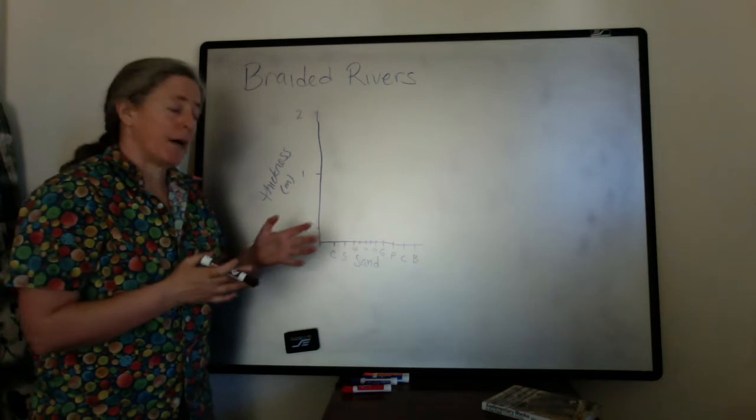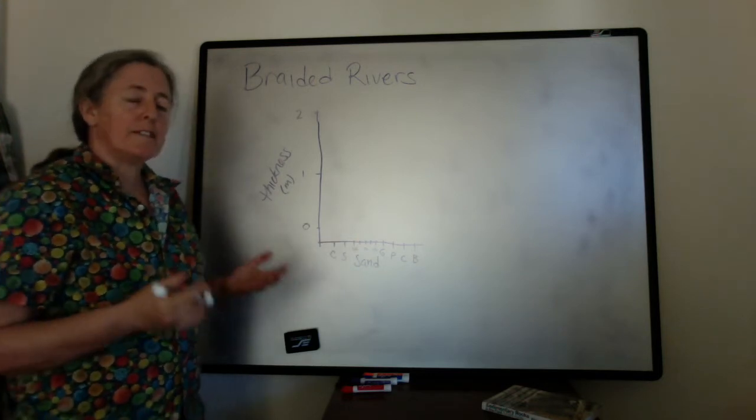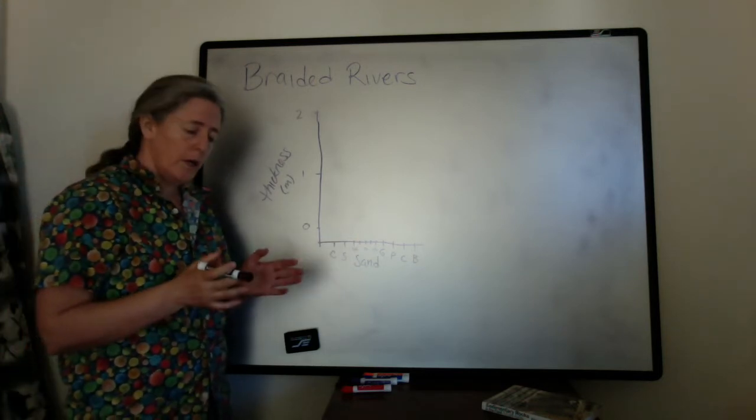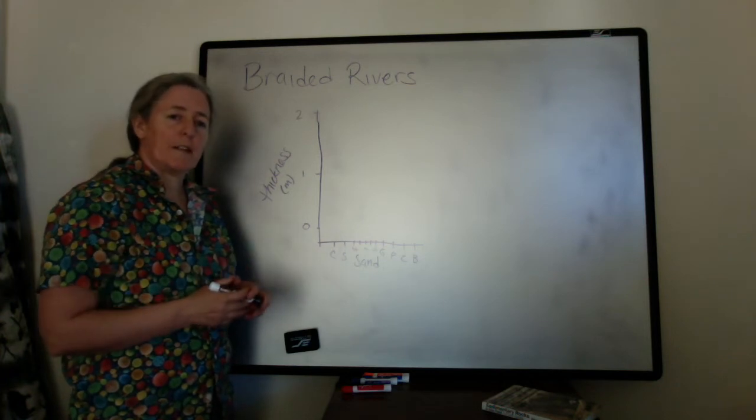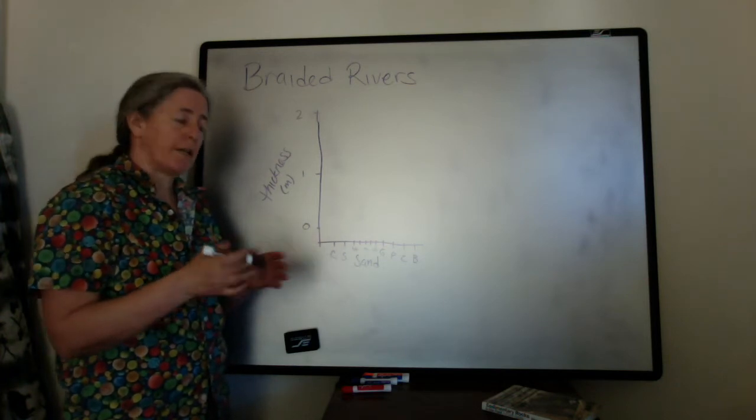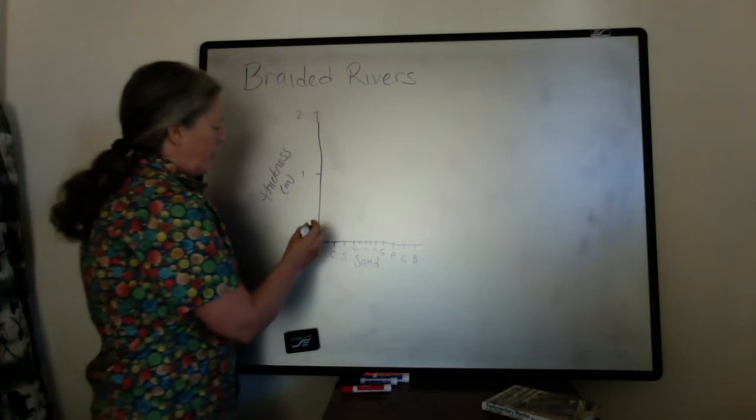So the channels in braided rivers migrate back and forth and the deepest part of the flow has coarse grain sediments. But as the channels migrate they're eroding away the bars.